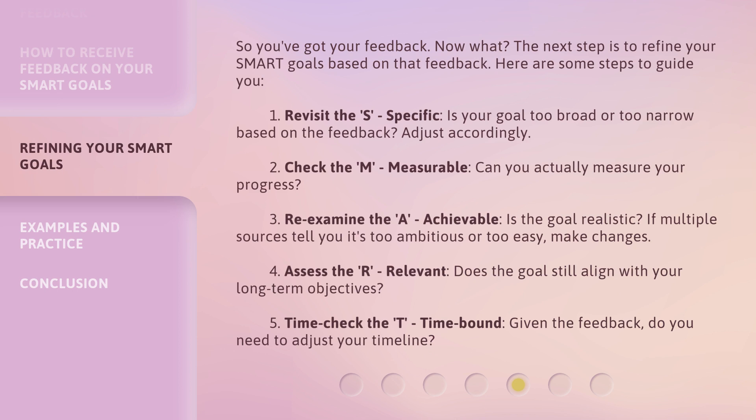Number two: check the M — Measurable. Can you actually measure your progress? Number three: re-examine the A — Achievable. Is the goal realistic? If multiple sources tell you it's too ambitious or too easy, make changes.